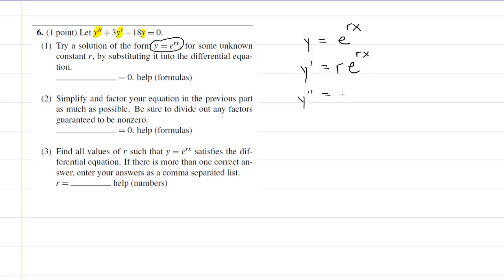The second derivative is very similar. We'll recopy the function, so it will be r e to the rx. And then we'll multiply by the derivative of this power. And the derivative, again, of rx is r. Now, we already have a factor of r in front. So if we multiply the original factor by another factor of r, we'll have r squared. So those are your first and second derivatives.